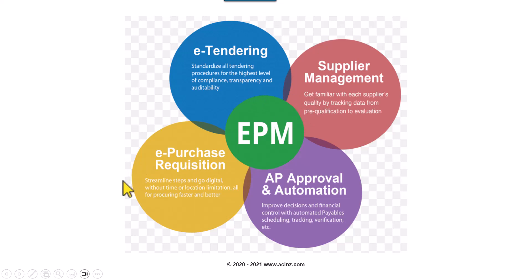Then there is e-purchase requisition, which streamlines steps to go digital without time or location limitations, for procuring faster and better. E-procurement is usually the i-Procurement functionality of Oracle Fusion. Then there is AP approval and automation for improved decisions and financial control, and automated payables scheduling, tracking, and verification, which is taken care of in the payables module. EPM tries to connect all these areas to give insights to financial managers or C-level executives, assisting them in taking better informed decisions.